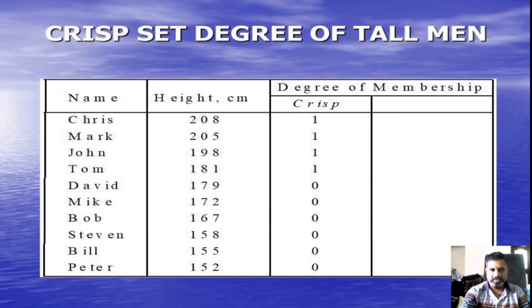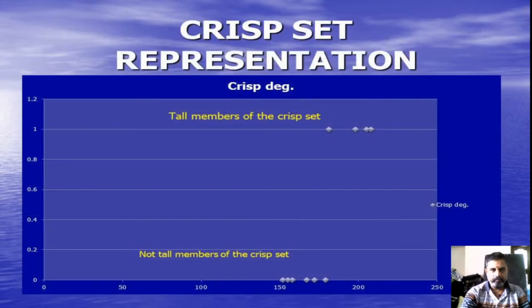For crisp set, the membership value is equal to 0 or 1. We give the value 1 to four elements, and remaining elements we give the value 0. This is the crisp set degree of tall man. The crisp set representation in graphs shows only 0 and 1 marked. Discrete graph.